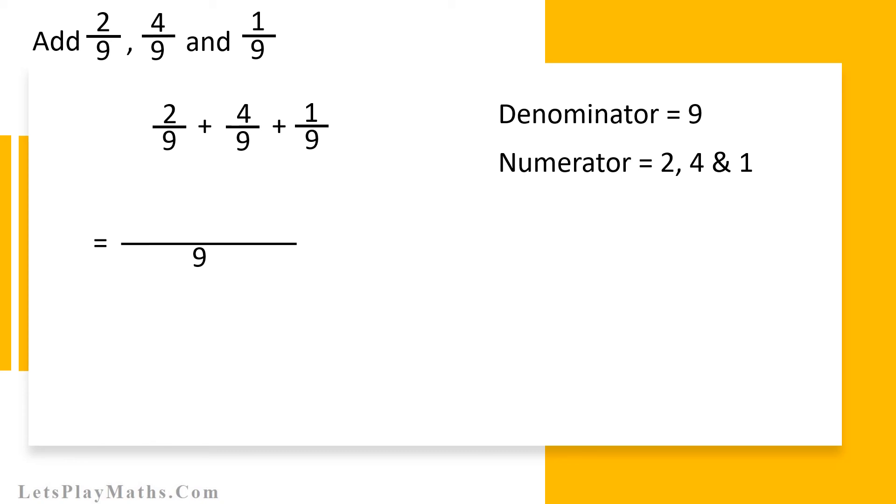And the result's numerators will be addition of all the numerators of three fractions. In this case it will be 2 plus 4 plus 1. So the numerator will be 7 and the denominator will be 9. Hence the answer equals 7 by 9.